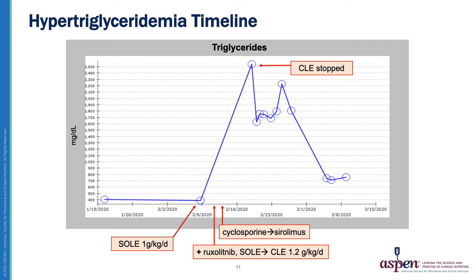Unfortunately, the patient developed severe hypertriglyceridemia. Prior to PN initiation, he had elevated triglycerides in the 400s, attributed to a combination of medications. Triglycerides were 389 milligrams per deciliter when checked on PN day 2, in line with his recent levels. A few medication adjustments were made around this time. On PN day 6, the patient was started on ruxolitinib for his GVHD, and on PN day 9, cyclosporine therapy was converted to sirolimus. Both ruxolitinib and sirolimus are known to cause hypertriglyceridemia. Triglycerides were rechecked on PN day 13 and found to be 2,540. Lipids were immediately stopped, and a level was rechecked a few hours later, which was still very elevated at 1,629. Lipids remained held, but triglycerides stayed in the high 1,000s over the next weeks, then began to trend down while still remaining very elevated.